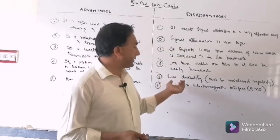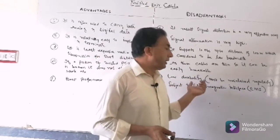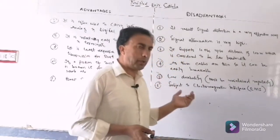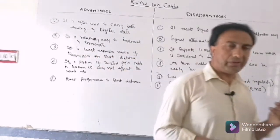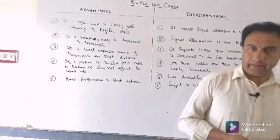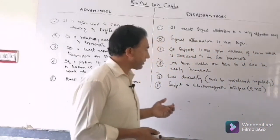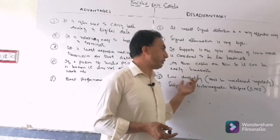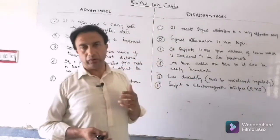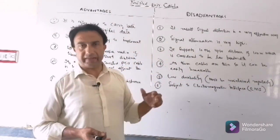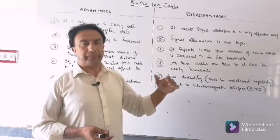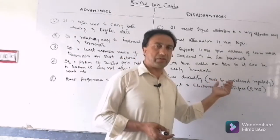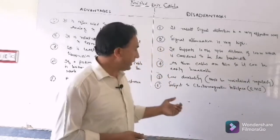The fifth disadvantage is low durability. Durability means the working performance of something upon resistance. It has very low durability because it must be maintained regularly and replaced with the passage of time, as it shows less resistance to opposing forces.